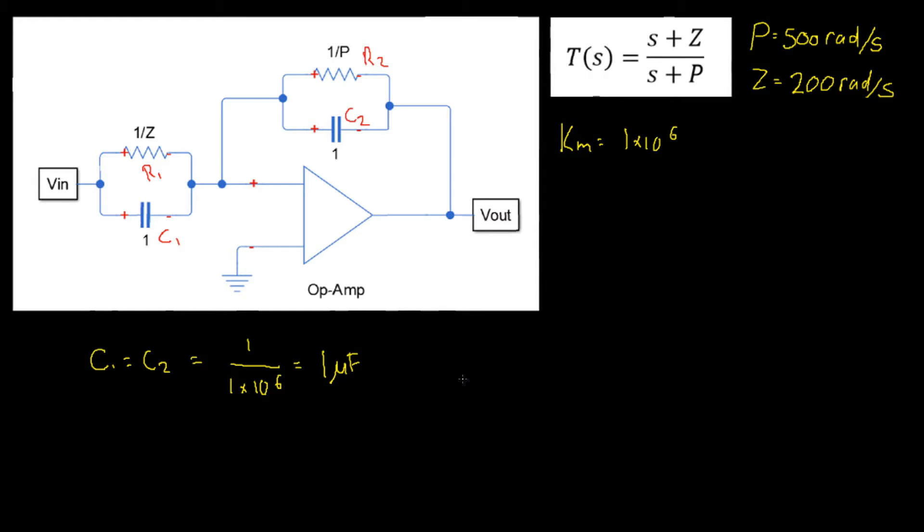We can then repeat a similar process for both of our resistors. Firstly, let's do R1. R1 currently has a value of 1 divided by z where z is our zero position of our transfer function and has been given to us as 200 radians per second. We then scale that up by our scaling factor by multiplying it by 1 times 10 to the power of 6. This will give us a resistor value of 5 kilo ohms.